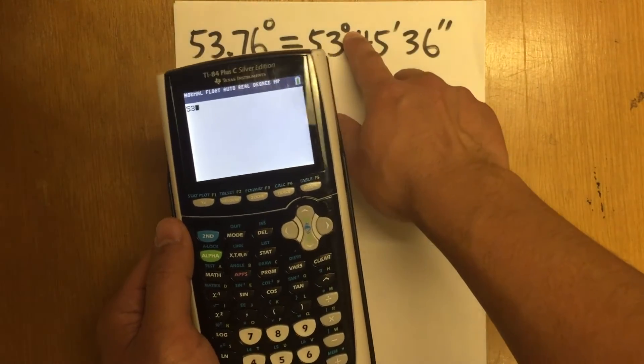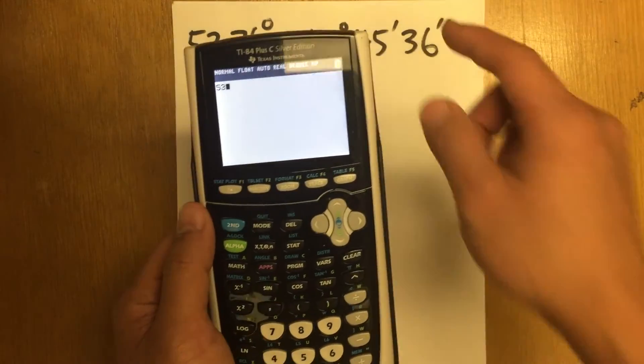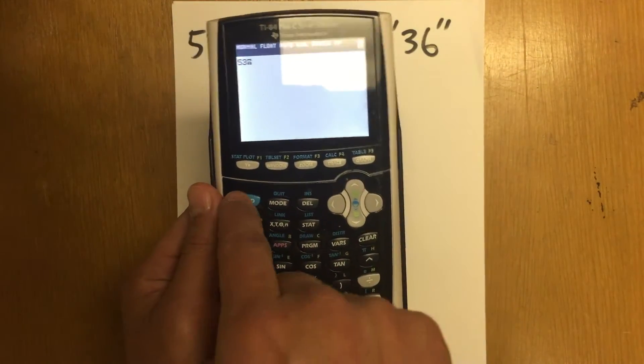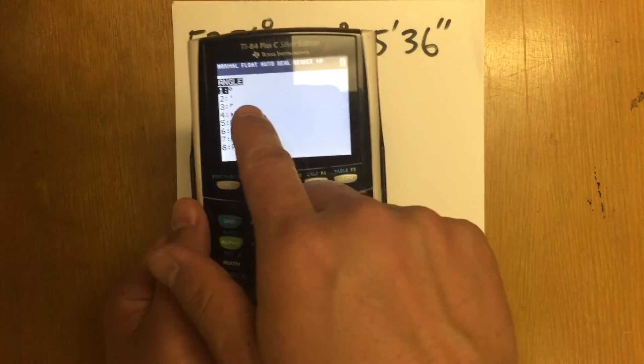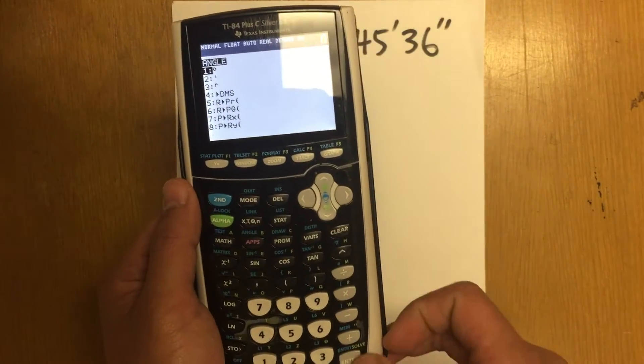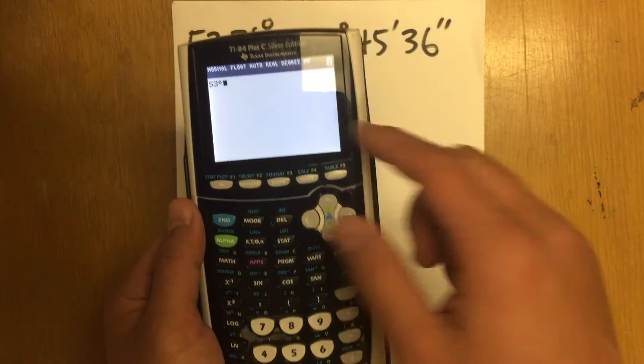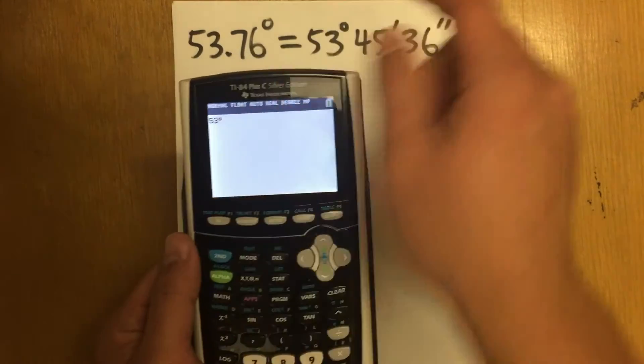So I do have to include the degree symbol in this case. To do so, let's go to second angle again. Choose option one for the degree symbol. I'm just going to press enter. And we will have the 53 degrees right here.